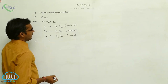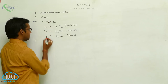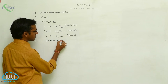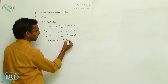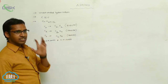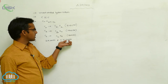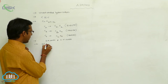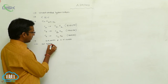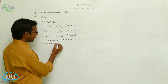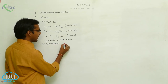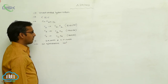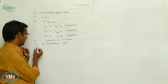In alkynes, a triple bond is present. In that triple bond, 2 pi bonds and 1 sigma bond are present. So between the carbons, 2 pi bonds and 1 sigma bond are present. Generally, alkynes undergo SP hybridization, and the bond angle is 180 degrees.